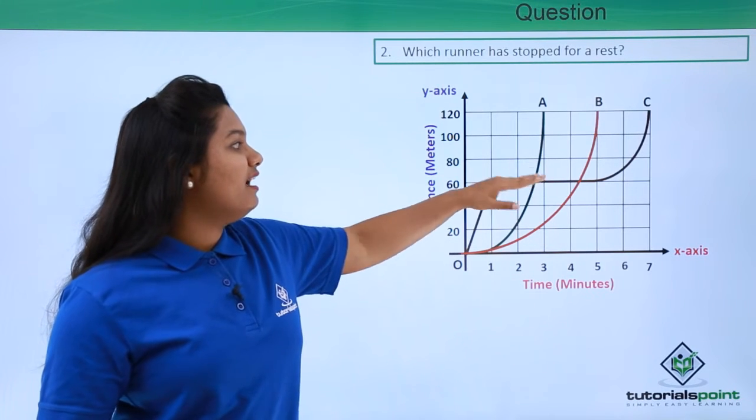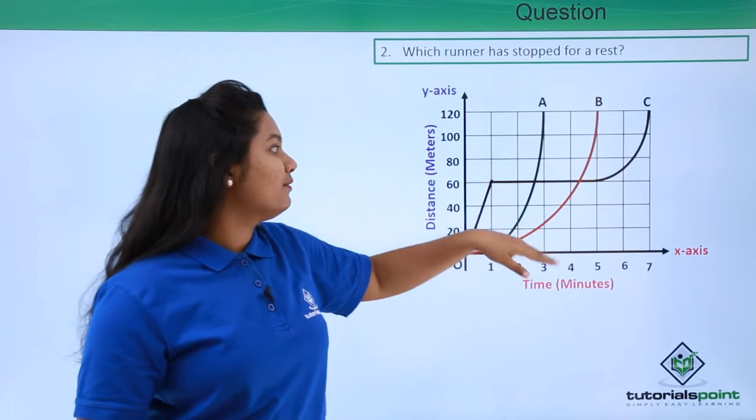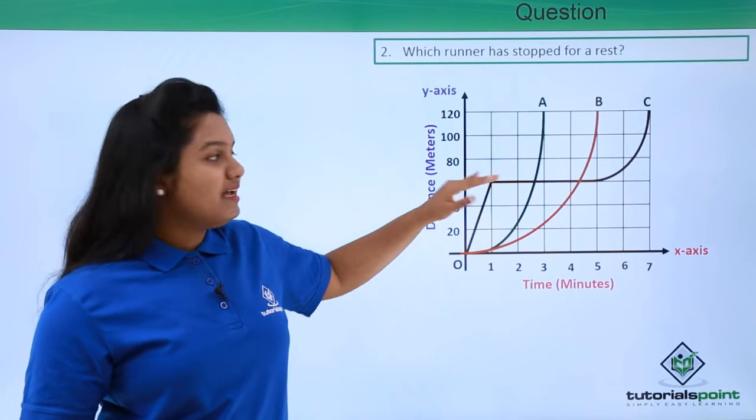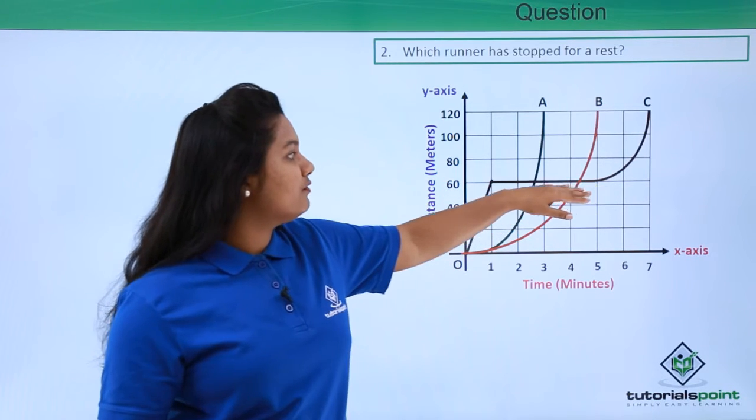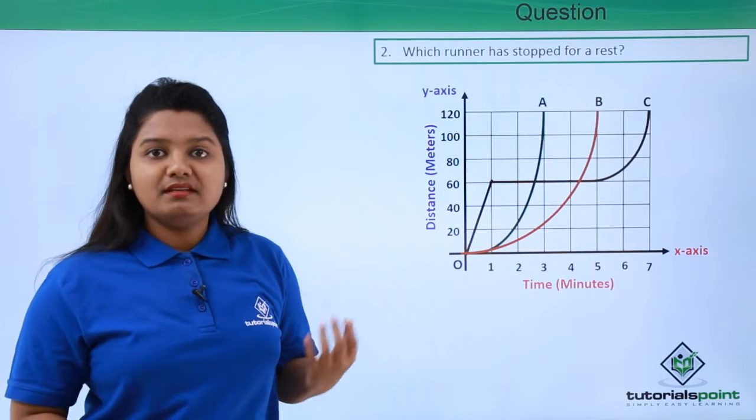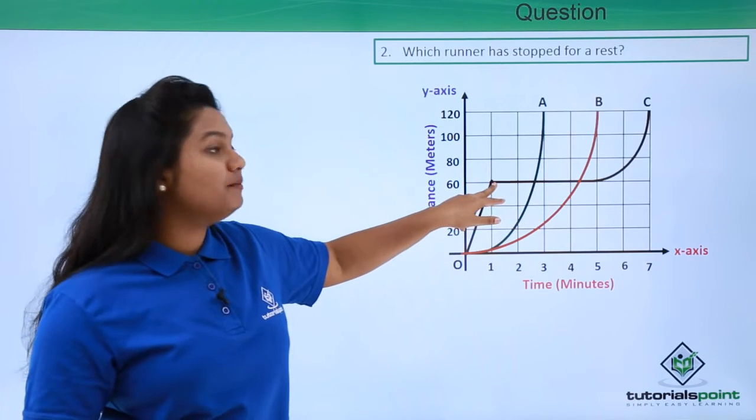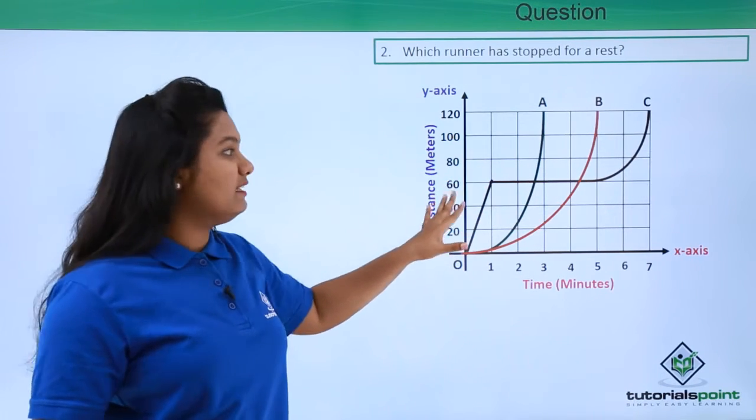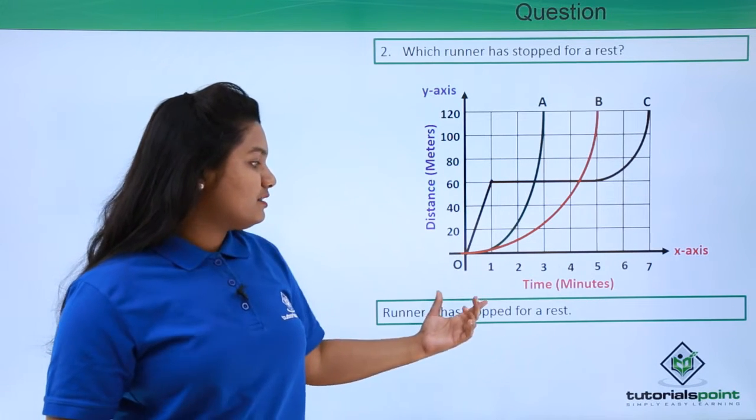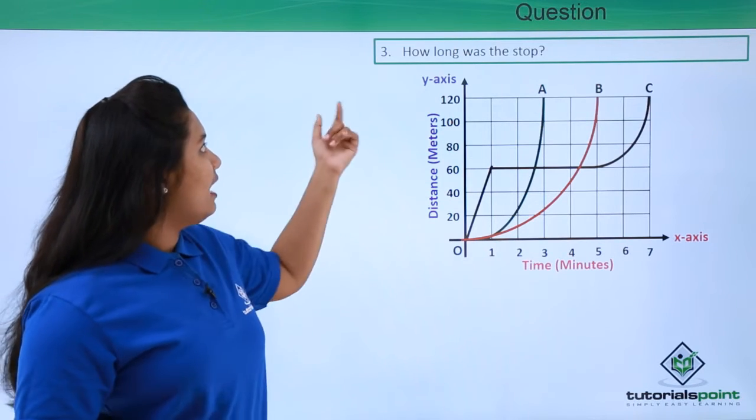Now we see here such a thing happened only with runner C. Here we can see that up to this part C was running, and this part of the curve C is a straight line which is parallel to the x-axis. This would mean that C has stopped for this much time in between, or C was taking rest for this time. Runner C has stopped for a rest, so this will be the answer.